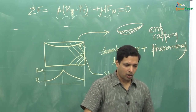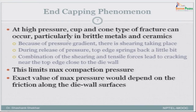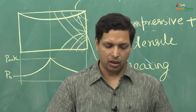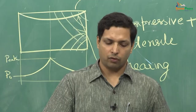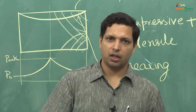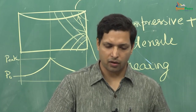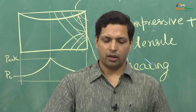Let us get back to the slide. At high pressure, cup and cone type of fracture can occur, particularly in brittle metals and ceramics — this phenomenon is more common in brittle materials, not so much in ductile ones. Because of pressure gradient, shearing takes place. During release of pressure, the top edge springs back a little, so there is a shearing and tensile force leading to cracking near the top edge close to the die wall — this is the end capping phenomenon. This limits the maximum compaction pressure that can be used.